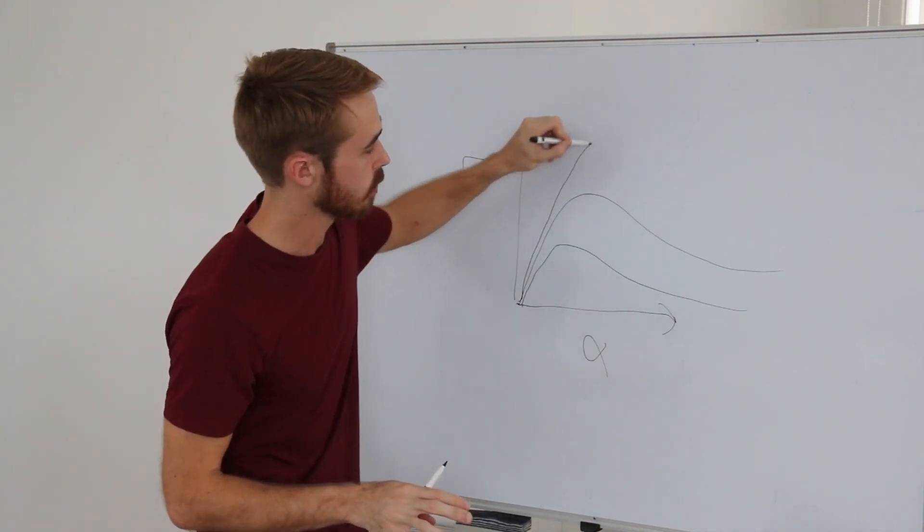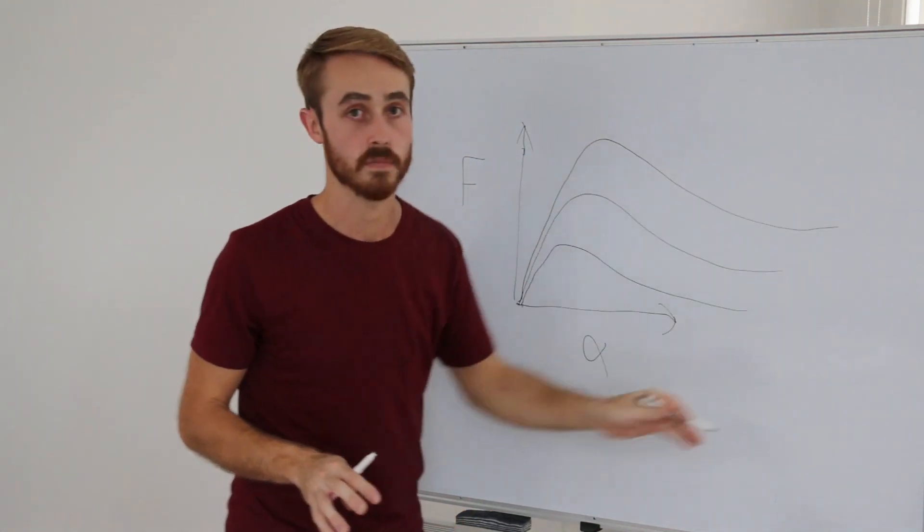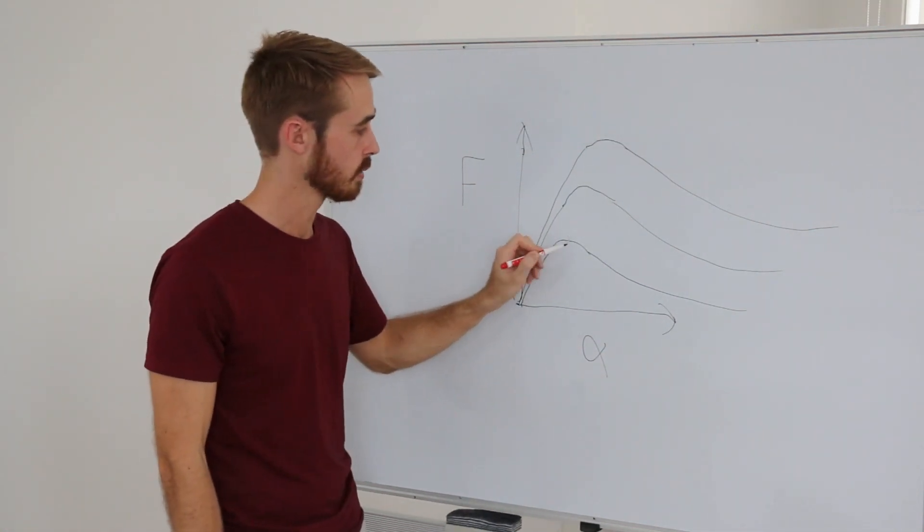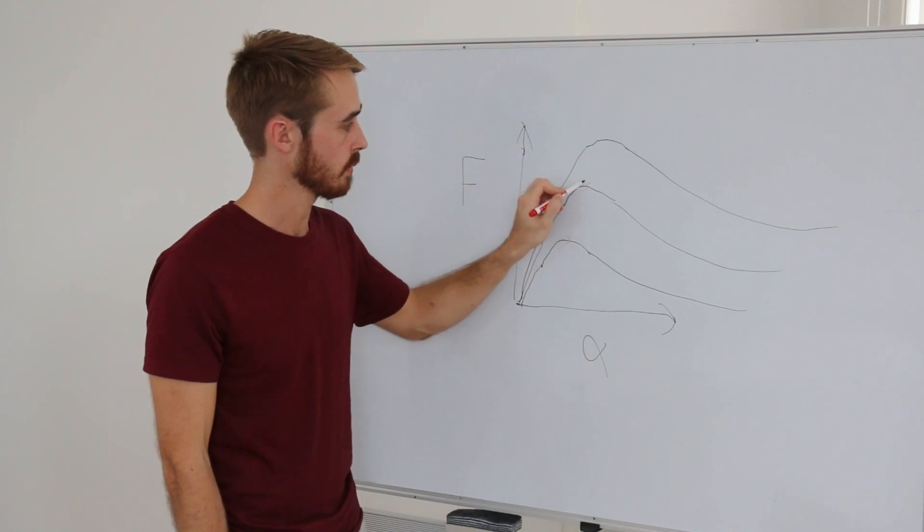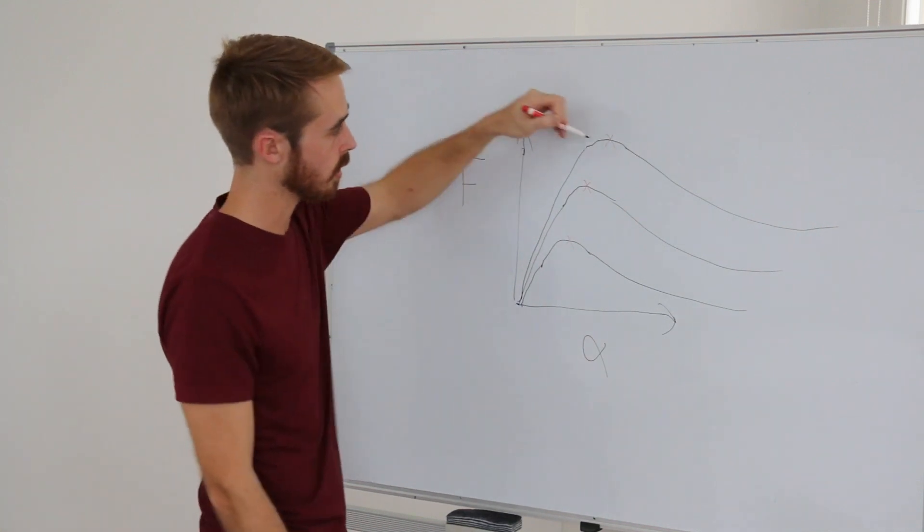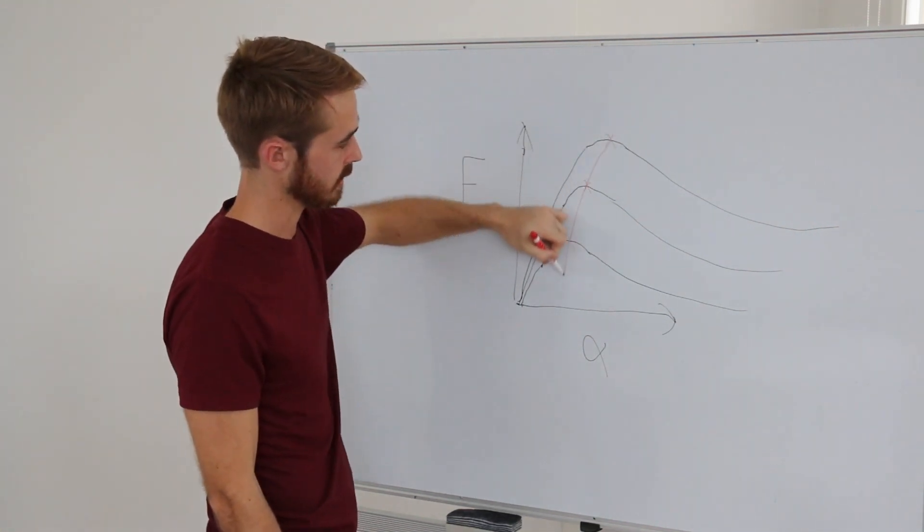If we then have a higher normal load, the curve may look like that. Let's identify our points of peak grip. We have a point here, a point here, and a point here. If we were to connect those dots we end up with a curve like this.